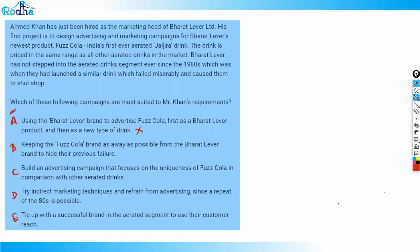Option B says: keep the First Cola brand as far away as possible from the Bharat Liver brand to hide their previous failure. Again, this is an extreme option — they don't want to completely distance First Cola from Bharat Liver. This is more of a give-up situation, rather than trying an alternative approach. Straight-away giving up is not a good strategy, so option B is not a good campaign technique either. We can eliminate it.